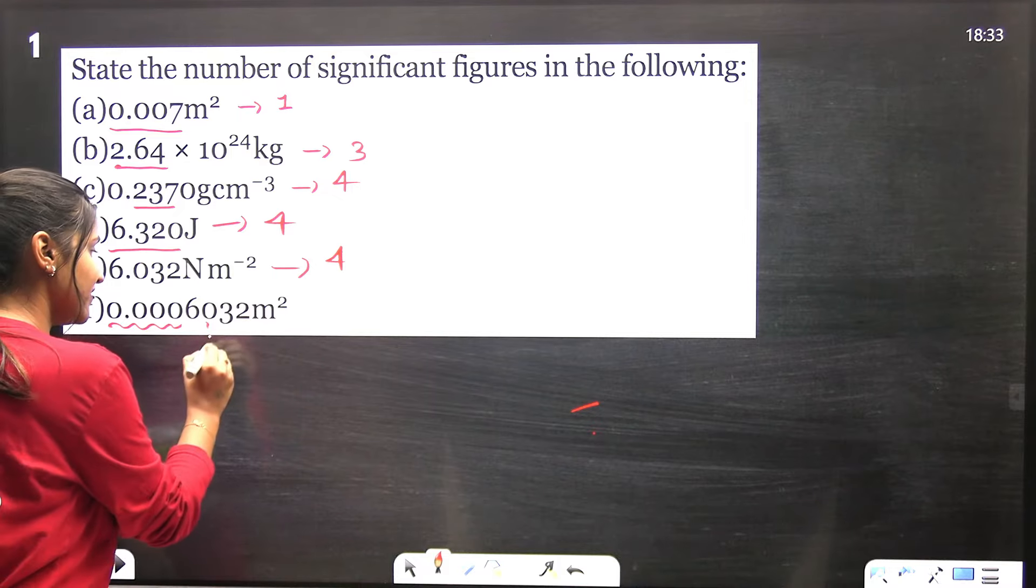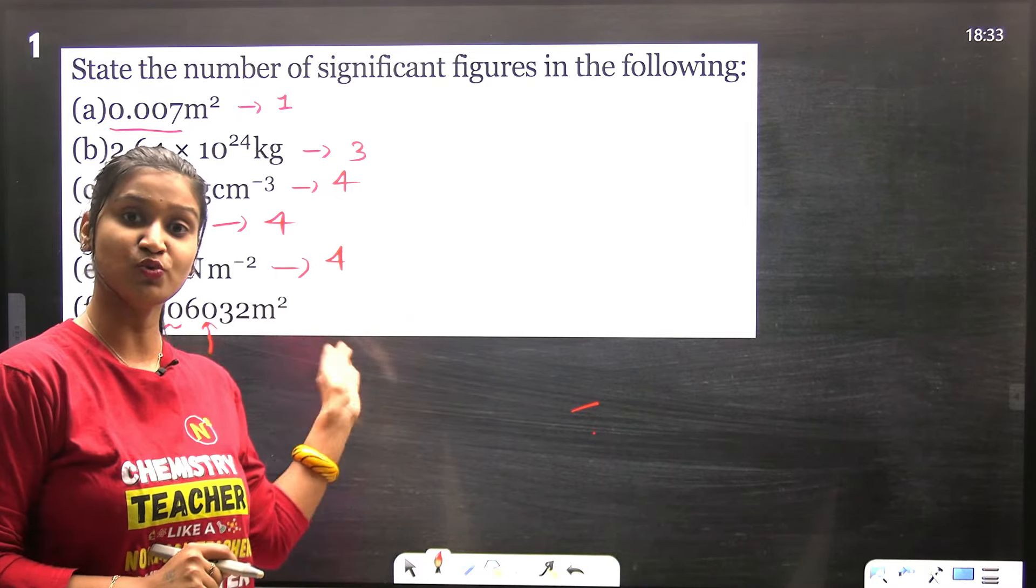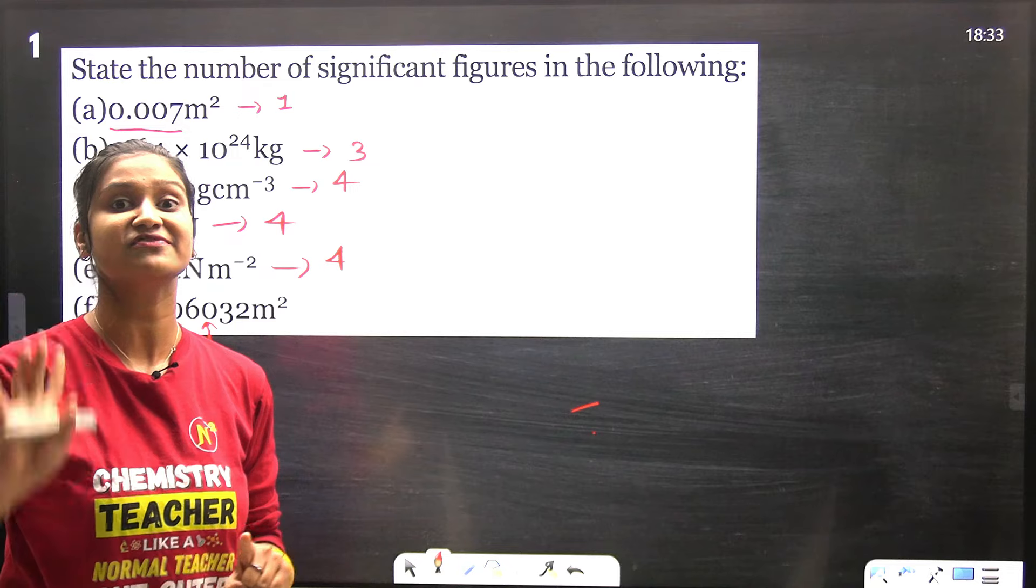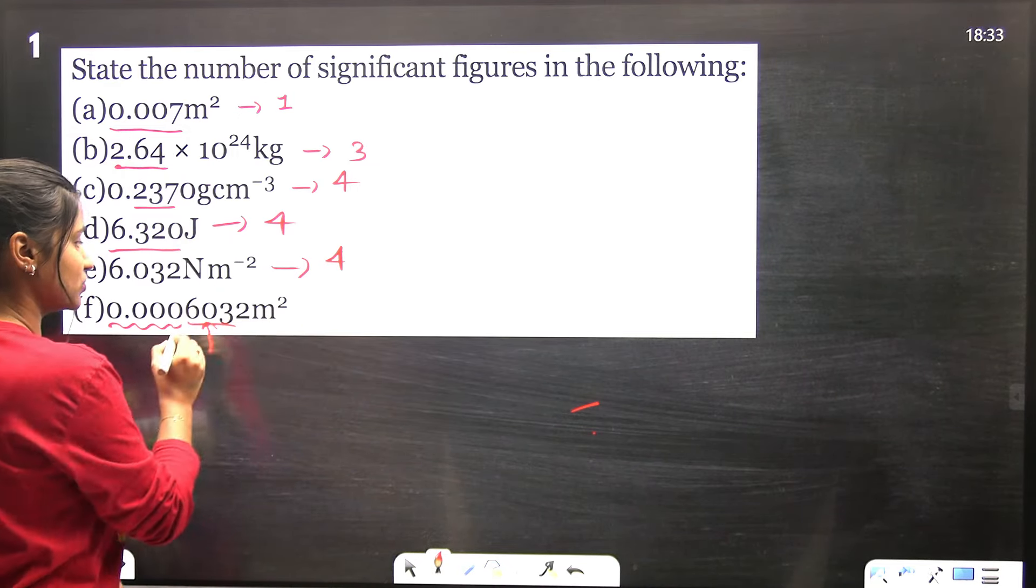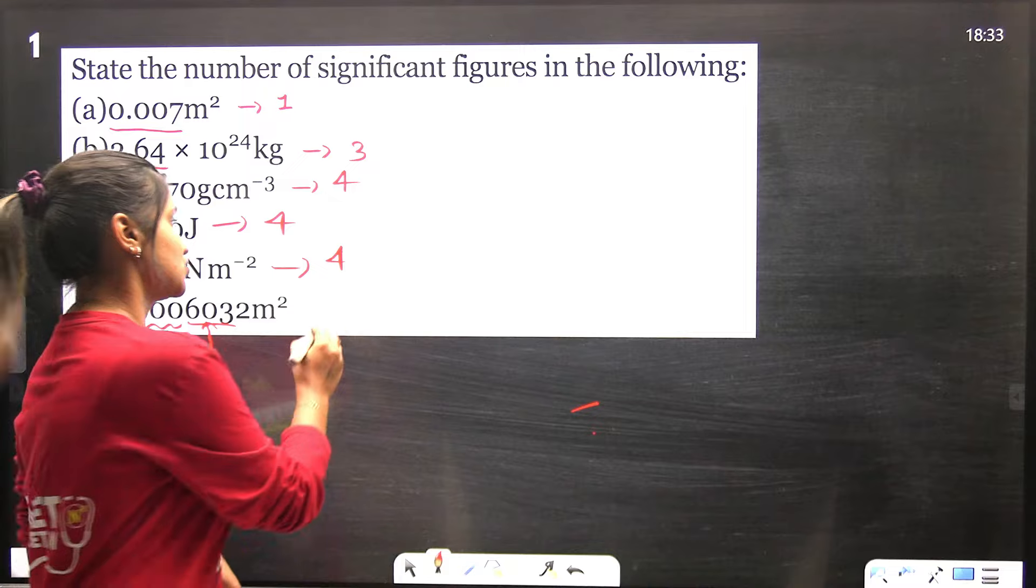This zero here is significant. If there was a zero after the two, that would also be significant. So again, how many significant figures are there? 6, 0, 3, 2 - four significant figures. So we are done with question number one.